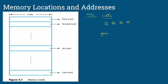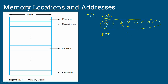We can group cells together. The number of cells in a group is eight cells — one, two, three, four, five, six, seven, eight. So eight different cells form a single group, and that group is called a byte. A byte is a group of eight different bits.